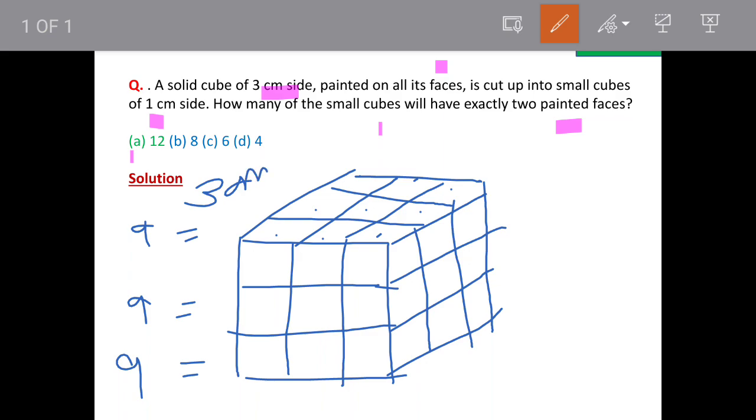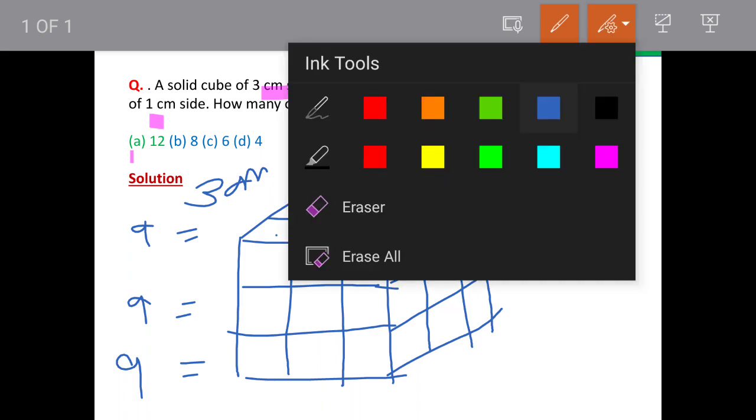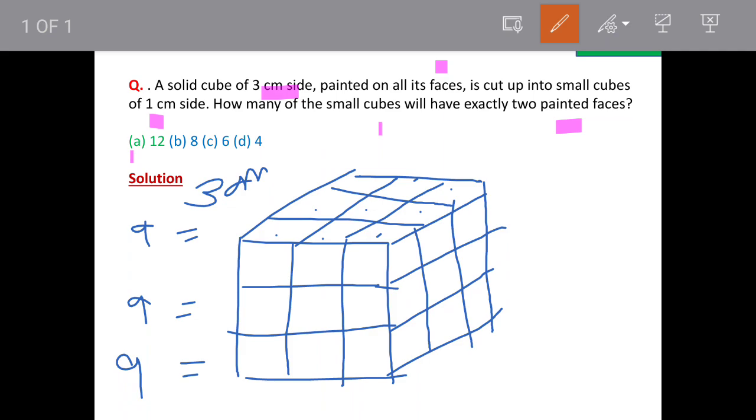So now we will see how many cubes are going to be painted on 2 faces in the top row. So now these corner cubes will have 3 faces painted. All the 3 corner cubes. And the cube in the center will have only 1 face painted. So how many are left? We have got 4 cubes which will be having 2 faces painted. So these 4 are this one, then you will have this one, this one and this one.